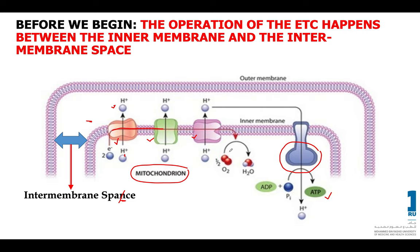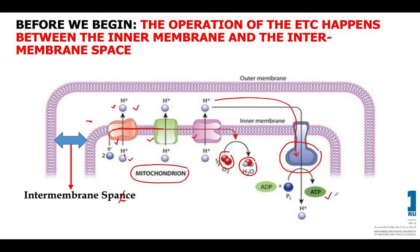Also during the electron transport chain, oxygen is reduced to water. To summarize: there is transport of electrons through specific complexes in the inner mitochondrial membrane; protons are pumped out from the mitochondrial matrix into the intermembrane space; these protons come back inside across a concentration gradient; and the ATP synthase enzyme helps in the synthesis of ATP from ADP and inorganic phosphate. That is the overall summary of the electron transport chain.